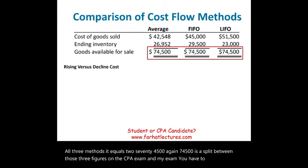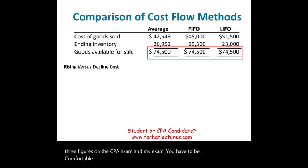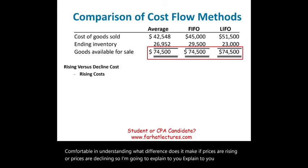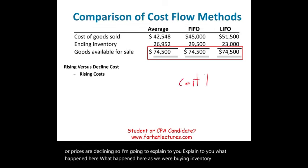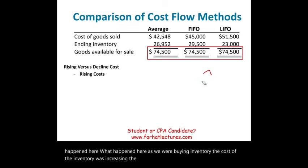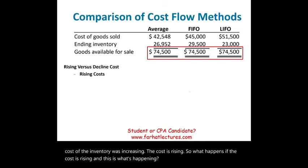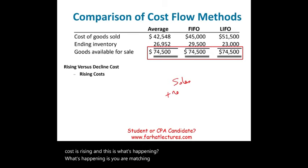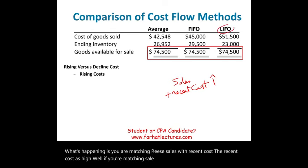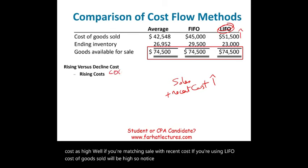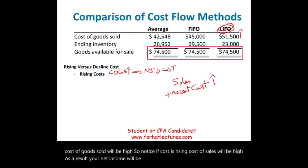On the CPA exam, you need to understand the impact of rising or declining prices. In our example, inventory costs were rising. Under LIFO with rising costs: you're matching sales with recent (higher) costs, so cost of goods sold is high, net income is low, and taxes are low. Under LIFO with declining costs: cost of goods sold is lower, net income is higher, and taxes are higher.